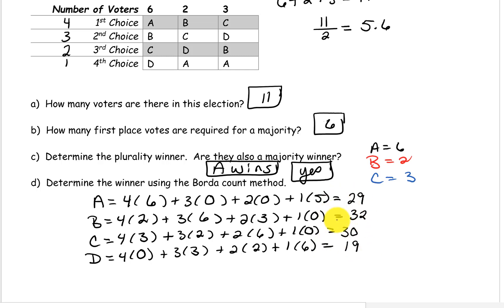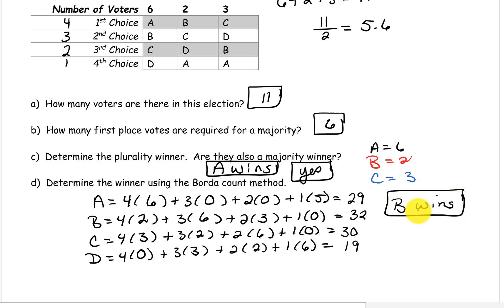So now using the Borda count method, we can see that candidate B wins — even though candidate A was really the majority winner. That's the problem that can come up with the Borda count method from time to time. That's it for this video; let me know if you have any questions, and I hope you're having a wonderful day!